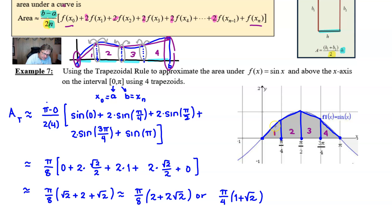For example, trapezoid one would just simply be one half times the sum of the bases, which is zero and the sine of π over four. That's how tall each of those two bases are. Would then be multiplied by the height, which is the distance from here to here, which is π over four. And that would take care of the entire first trapezoid.